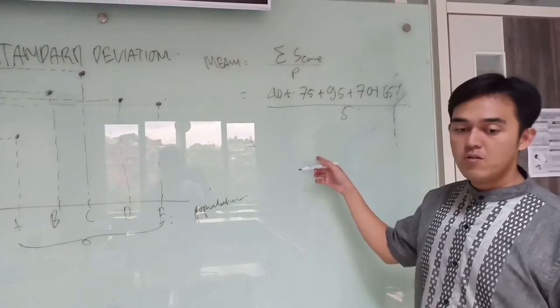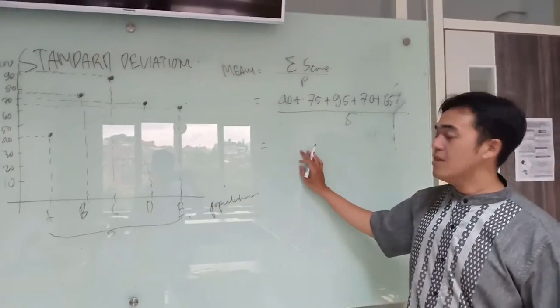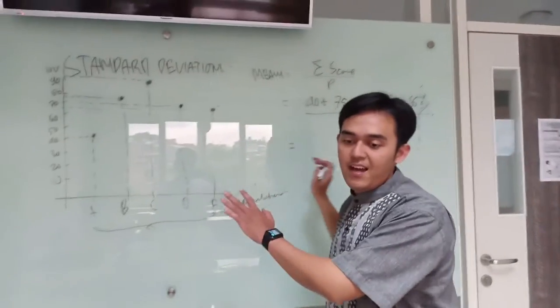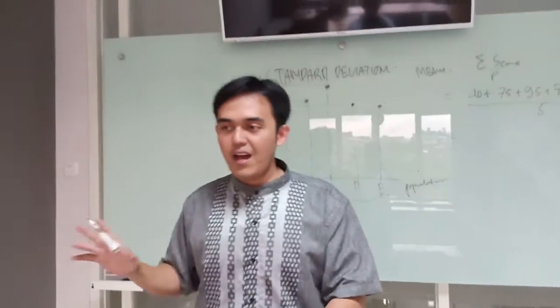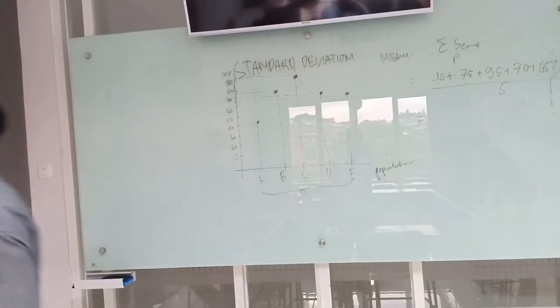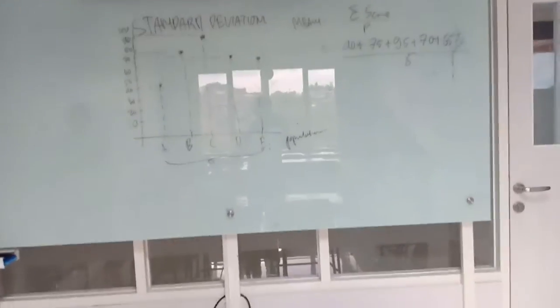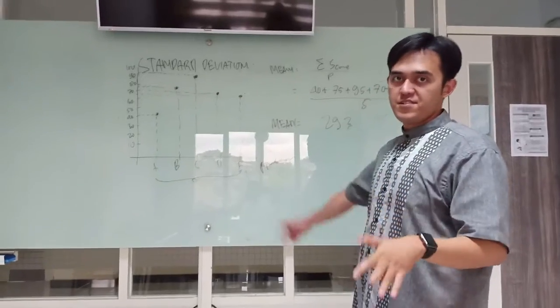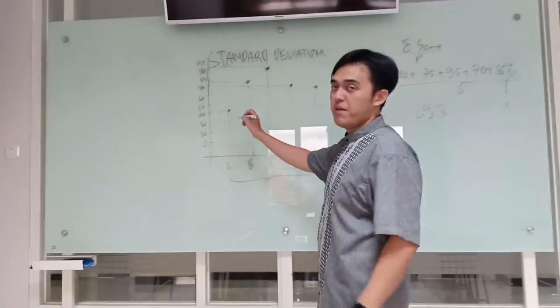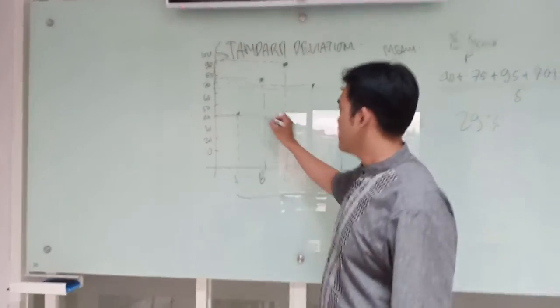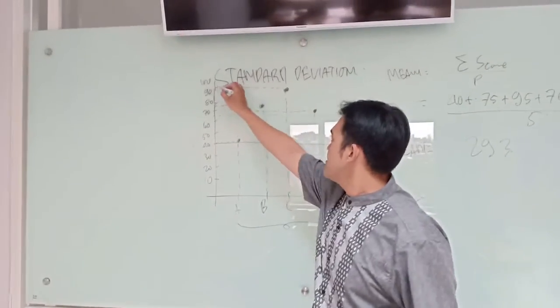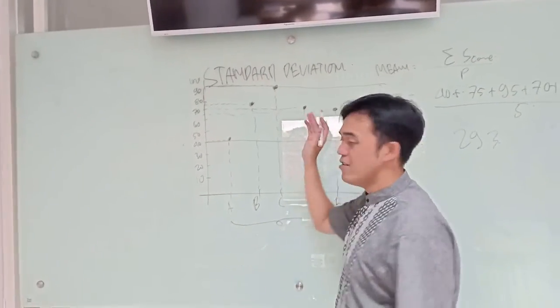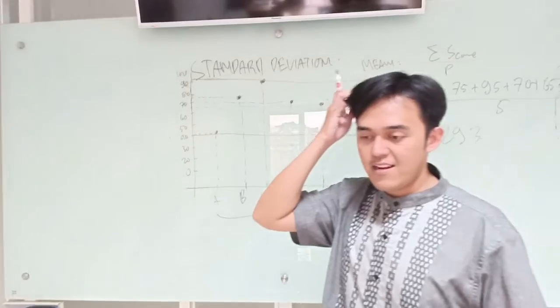Then we knew about the mean of this data. To make it quick, I will use calculator. Now we found the mean of this data. Let's make a line. This is the lowest score. This is the highest one. And how should we got the standard deviation?